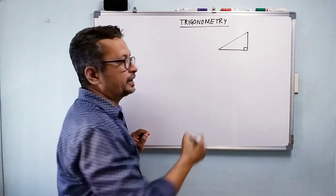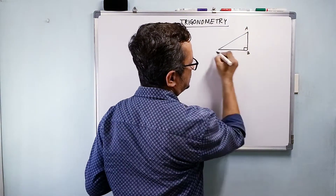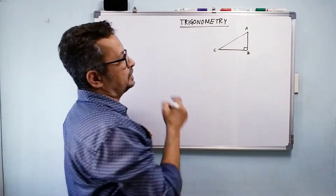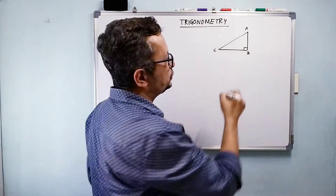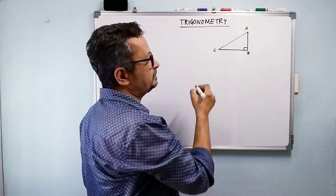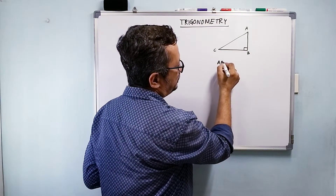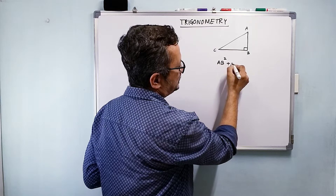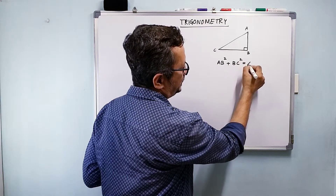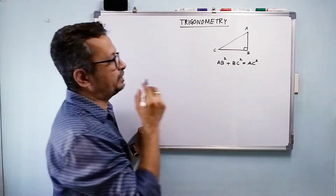I have this right-angled triangle ABC. Using Pythagoras theorem, what can we say? We can say that AB² plus BC² is equal to AC².